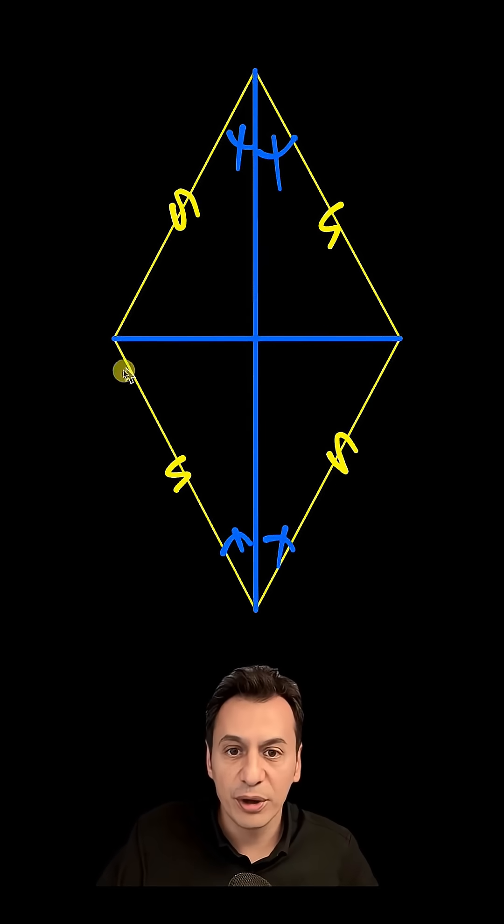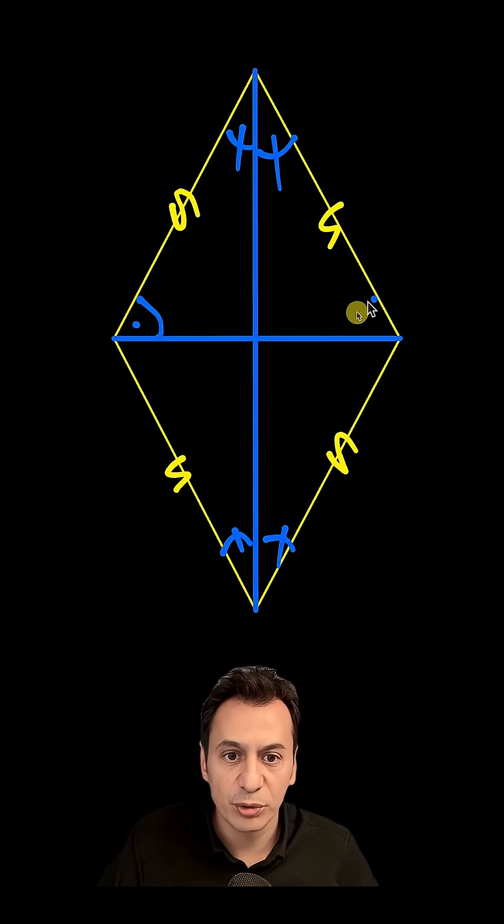Look at the triangle above and the triangle below. Since an isosceles triangle is formed here, this angle will be equal to this angle. And since this triangle and this triangle are congruent, the angles here will also be the same.